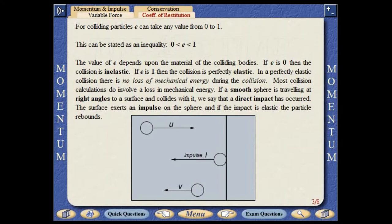If a smooth sphere traveling at right angles to a surface collides with it, we say that a direct impact has occurred. The surface exerts an impulse on the sphere, and if the impact is elastic, the particle rebounds.